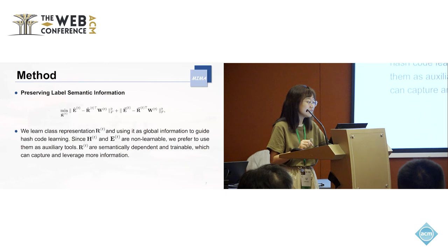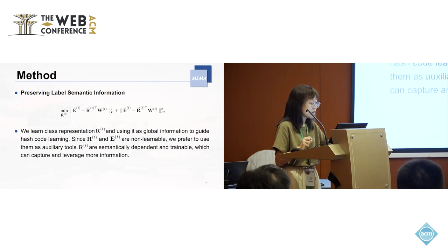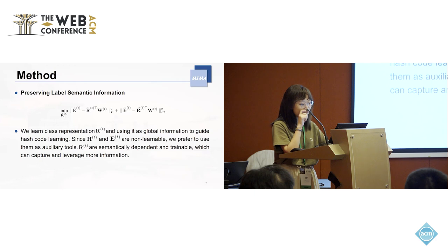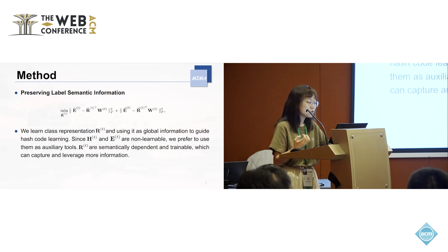When we are learning how to represent labels, it's important to look at not just the correlation relationship between classes, but also their semantic information. The semantic information helps the model define the boundaries between classes and improve the retrieval performance.